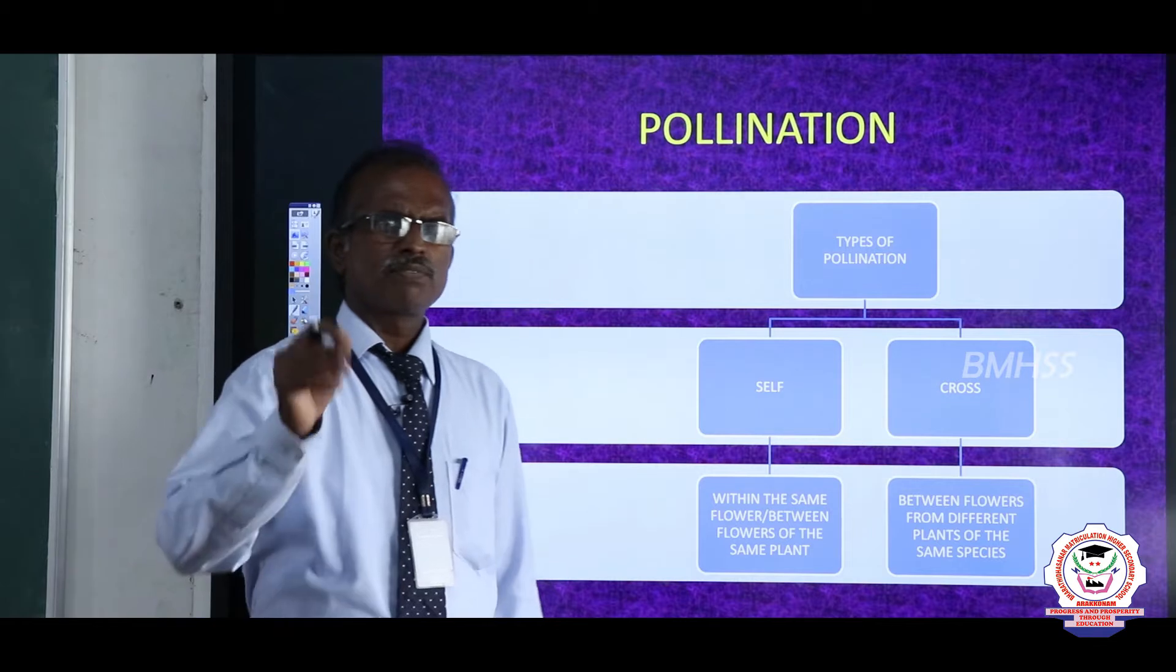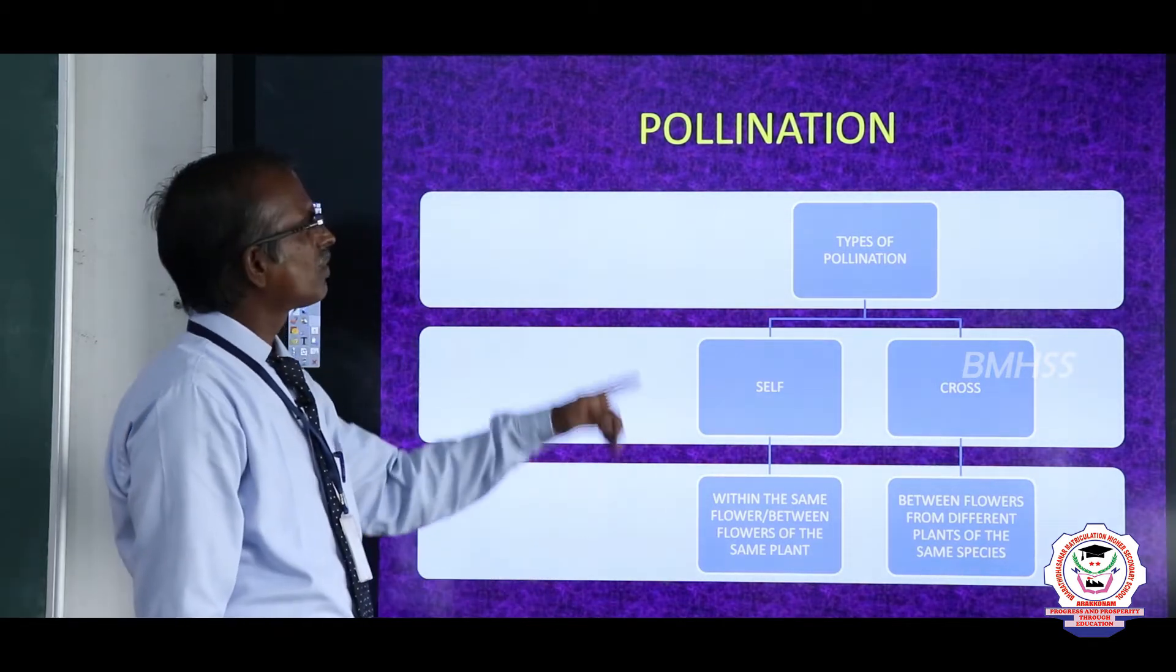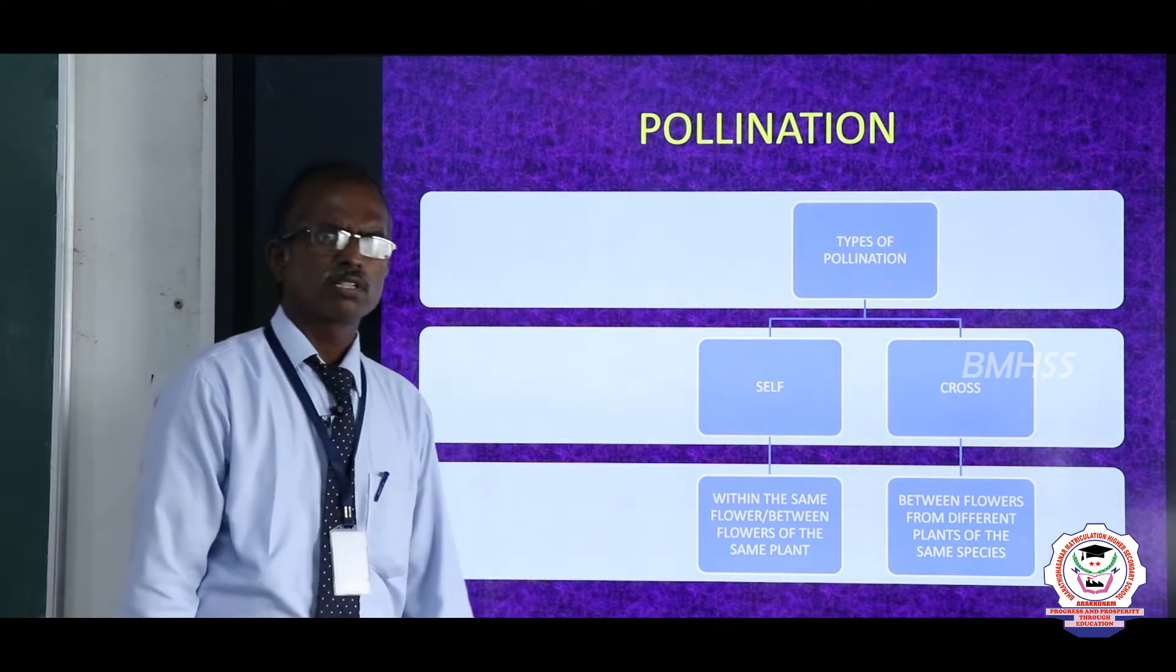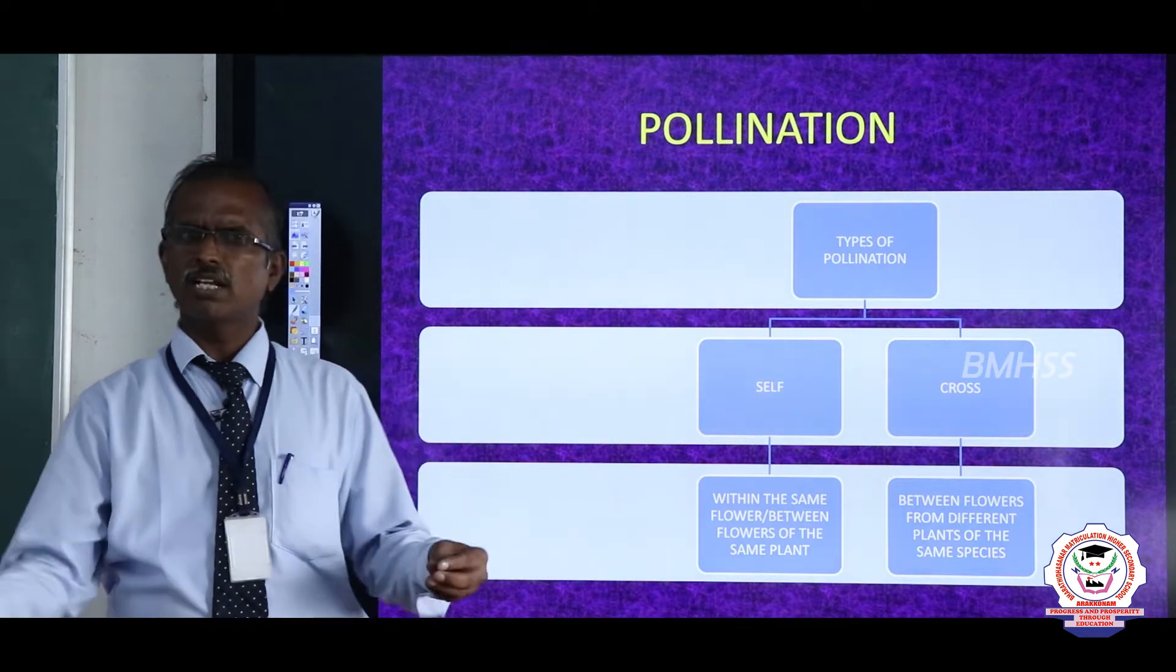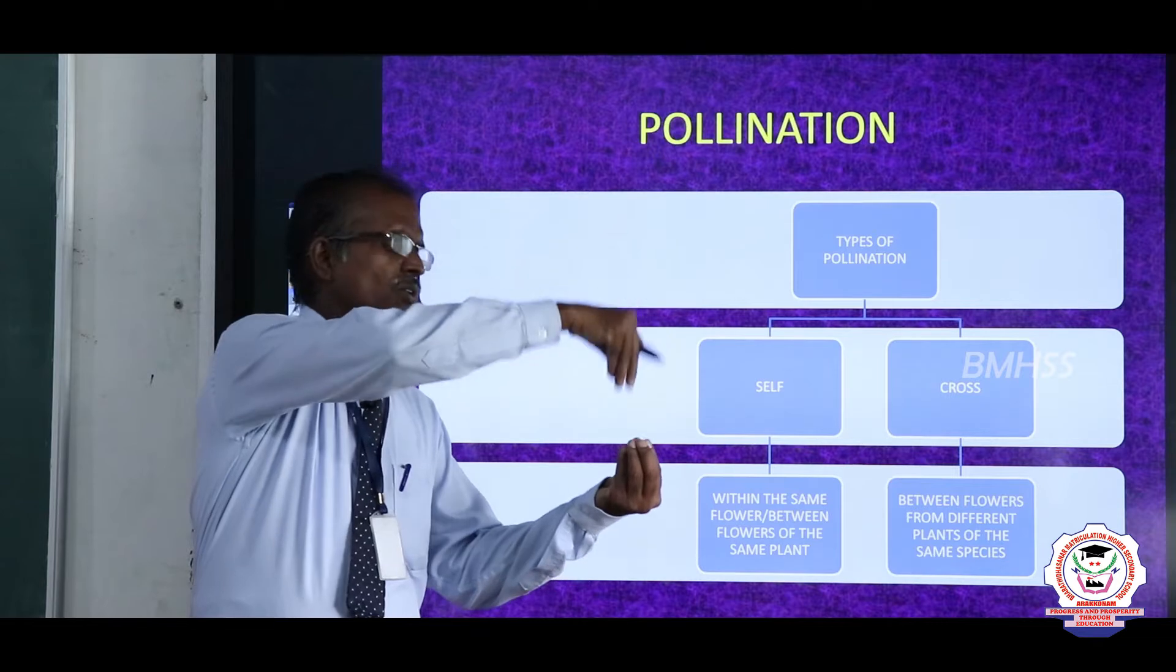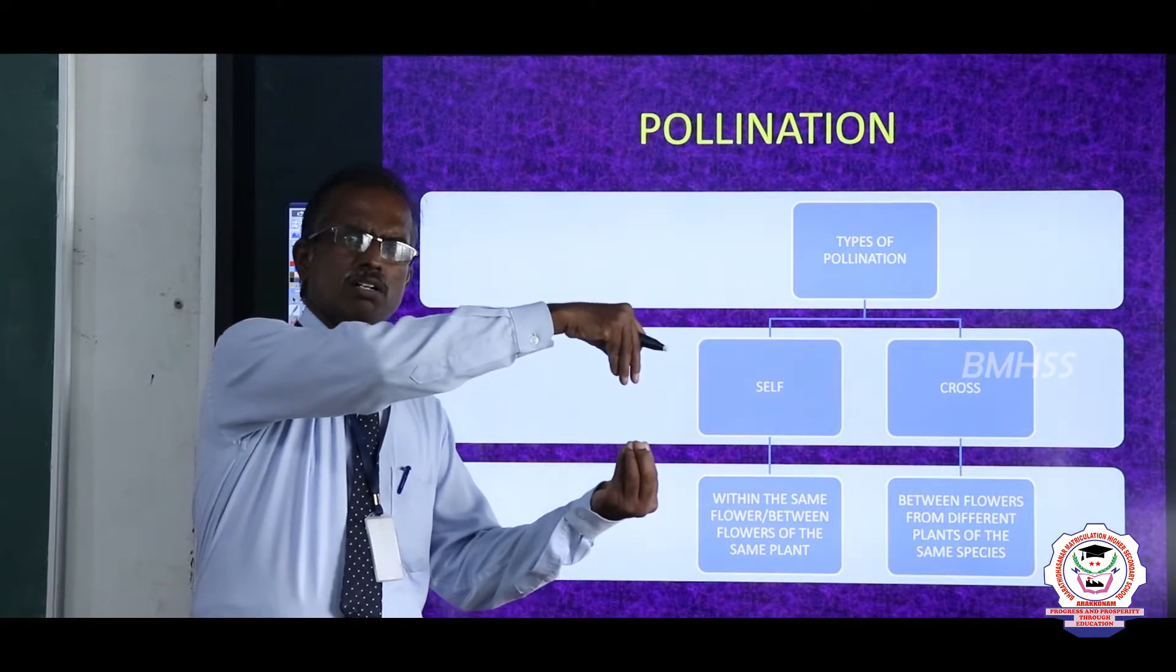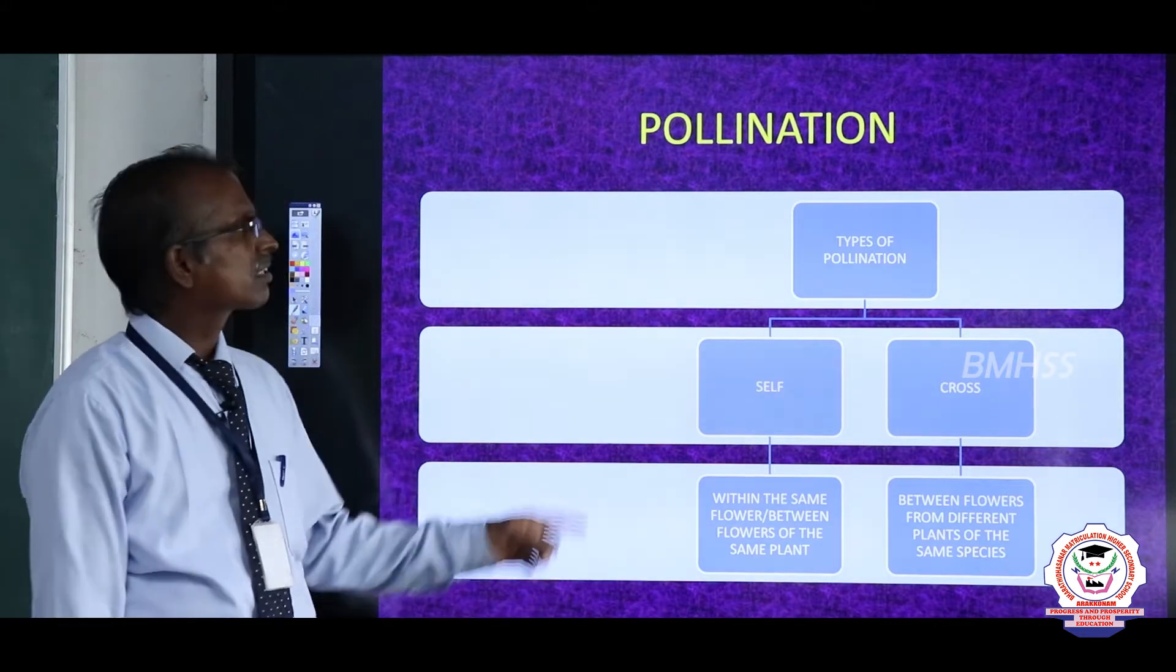Pollination is the first step in sexual reproduction in plants. What is meant by pollination? Pollination is the transfer of pollen grain from ripe anther to the stigma of the same or different flower.